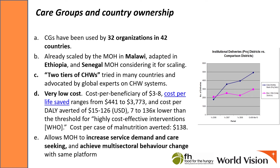This model is more sustainable and scalable in part because of the very low cost. The average cost per beneficiary per year for projects using the care group approach is in the range of three to eight dollars, for projects that often cover multiple sectors. On a per capita basis, the large Mozambique project costs 54 cents per year. The cost per DALY averted varies from about $15 to $126, a fraction of the threshold for highly cost-effective interventions. This model also allows the Ministry of Health to increase service demand and care seeking and achieve multi-sectoral behavior change with the same platform. This graph shows just one example of how health facility usage and service demand increased, in this case for institutional deliveries, after care groups were introduced.